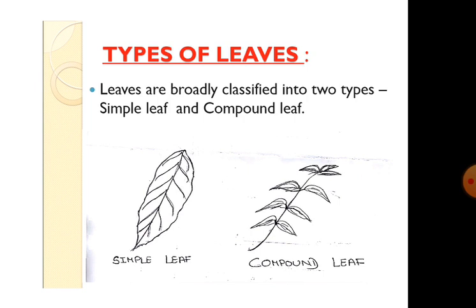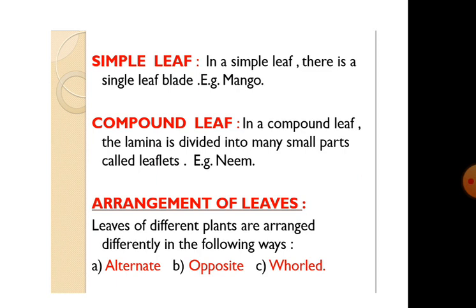Compound leaf: in a compound leaf, the lamina is divided into many small parts called leaf blades. For example, neem and rose plants have compound leaves.